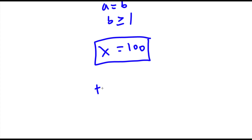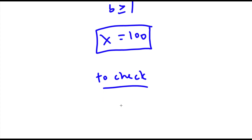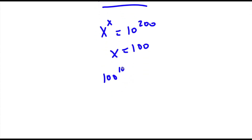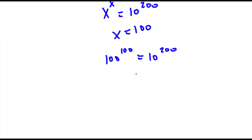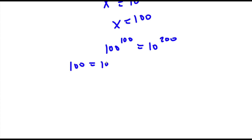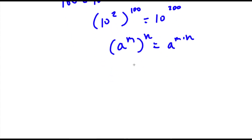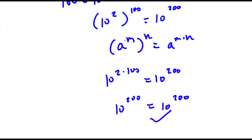Now to check: x to the power of x is equal to 10 to the power of 200, and x is equal to 100. So I have 100 to the power of 100 is equal to 10 to the power of 200. Now 100 is the same as 10 squared, so 10 squared to the power of 100 equals 10 to the power of 2 times 100, which is 10 to the power of 200. So 10 to the power of 200 equals 10 to the power of 200 — our solution is correct.